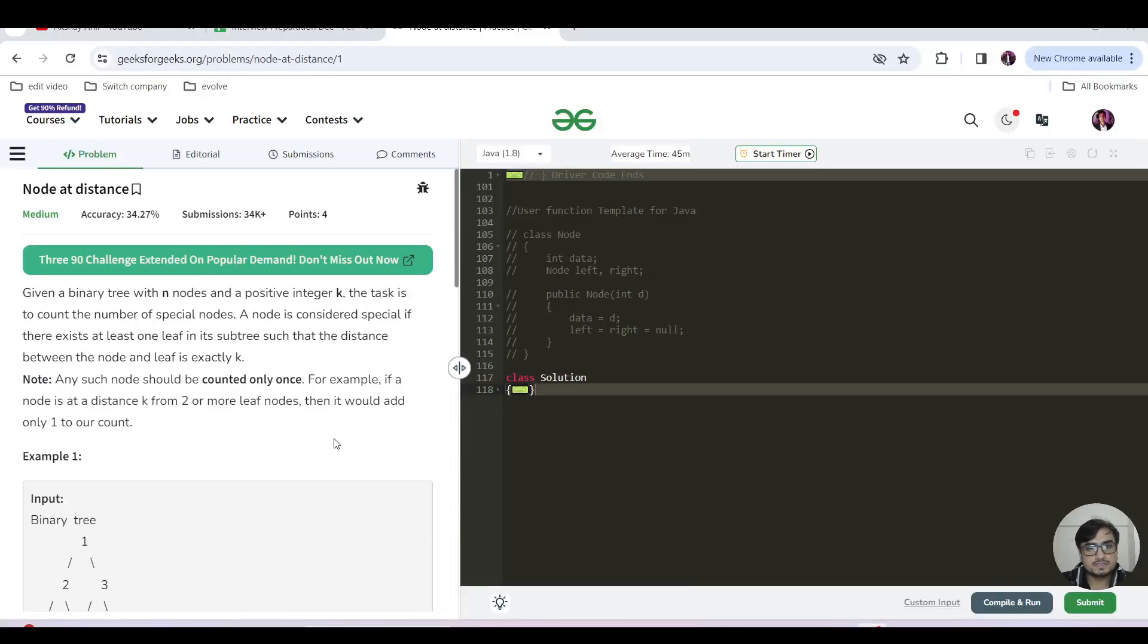Okay, so hello everyone, this is Akshay here. Let's continue with today's problem of the day. Today's problem name is Node at Distance. We have been given a binary tree with nodes n and a positive integer k. The task is to count the number of special nodes.